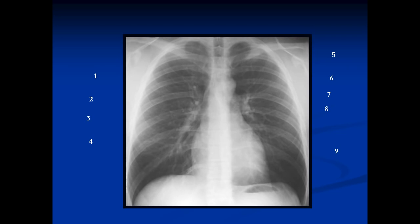We're going to start with the PA view of the chest, and the first structure we're going to talk about is the superior vena cava. Here we've got an arrow — there's an interface, a line you can see adjacent to the mediastinum. On one side of the line is white, on the other side is black. The reason we see this line is because it's an interface between air and soft tissue. If there's no air next to the mediastinum, we will not see the structure. This line comes all the way down from the neck right to the region of the right atrium, and that line is formed by the superior vena cava.